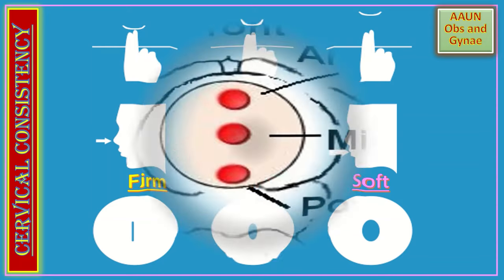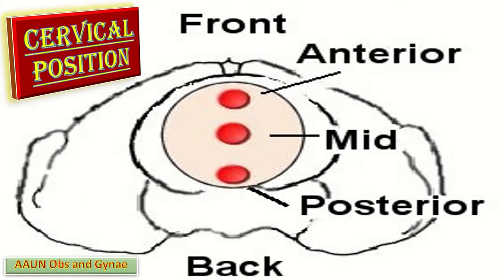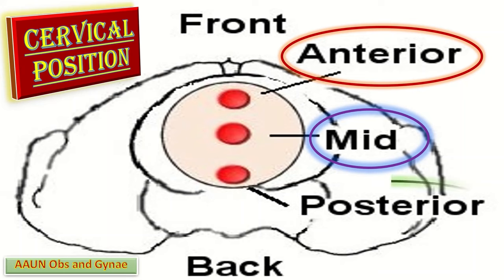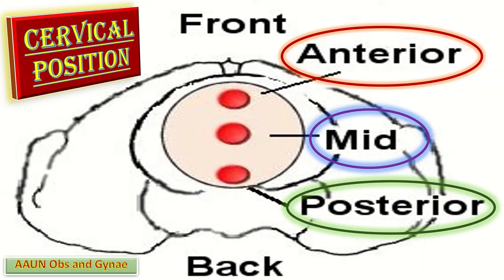After discussing dilatation, effacement, and consistency, the next point is cervical position. The cervical position may be anterior, midline, or posterior. Anterior means the cervix is pointing to the front and faces directly toward the examining fingers. Midline position means the cervix is more downward toward the feet. Posterior position means the cervix is facing toward the back and is usually very high up.